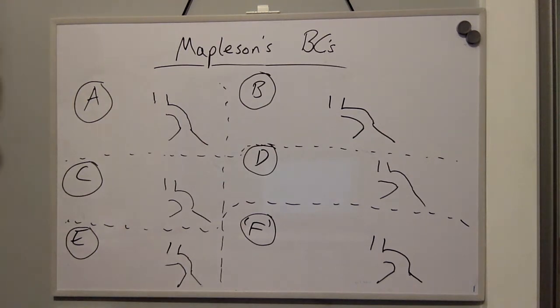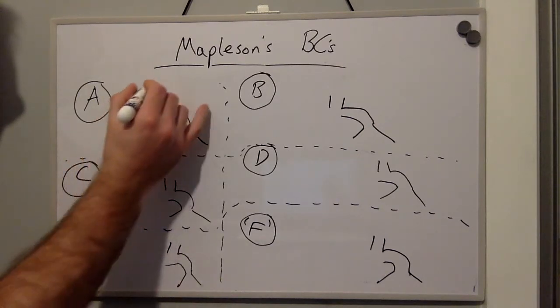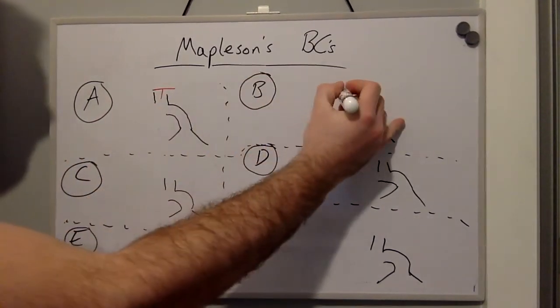On Mapleson breathing circuits A, B and C the expiratory valve is in this location here.